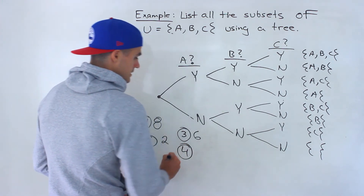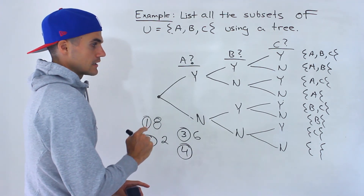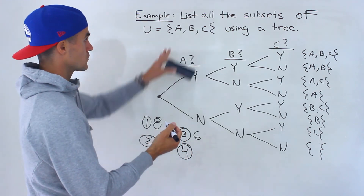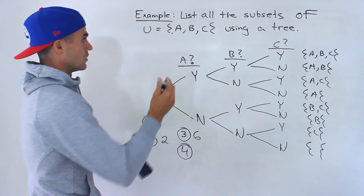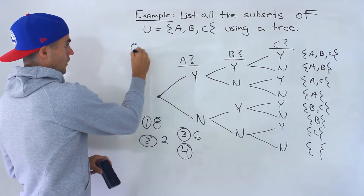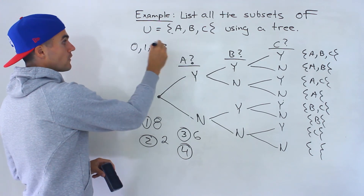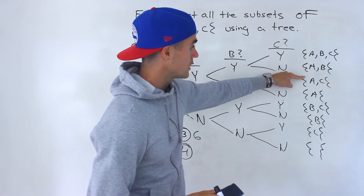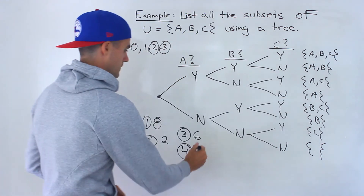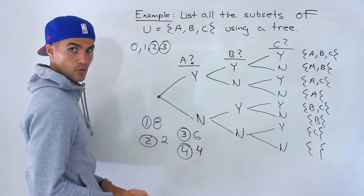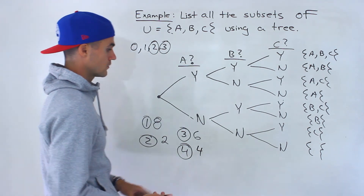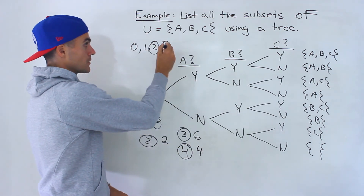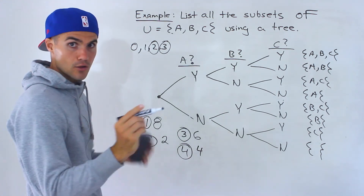Number four asks how many subsets contain more than one element. With only three elements, a subset can have zero, one, two, or three elements. More than one means either two or three elements. Counting those subsets — one, two, three, four — the answer is four. That's the same as asking how many subsets contain two or three elements.